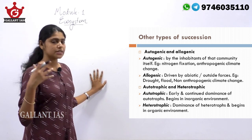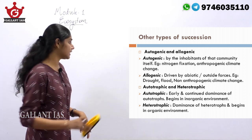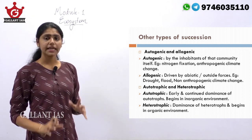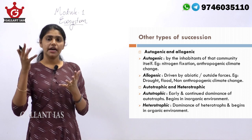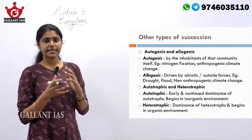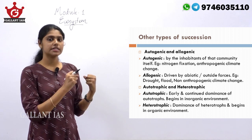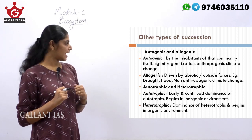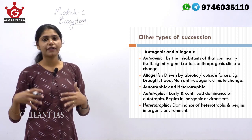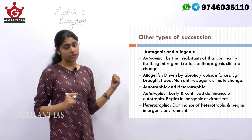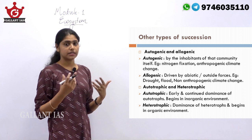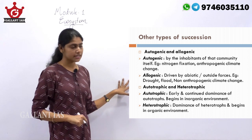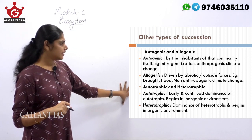Autogenic succession is the type of succession initiated by the community inhabiting that area itself — the biotic community itself is involved in this succession. Allogenic succession is where some external factors are involved, driven by abiotic factors. Such succession driven by external/abiotic factors is known as allogenic succession.